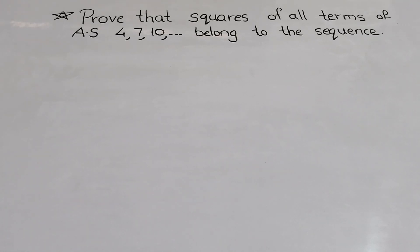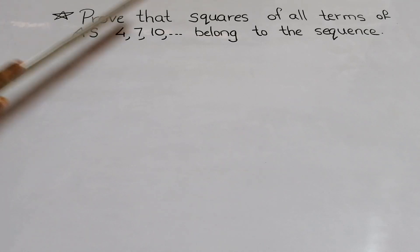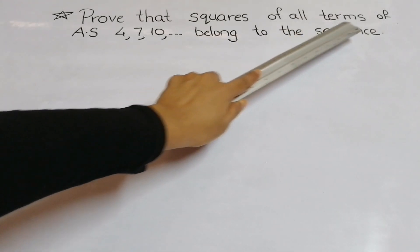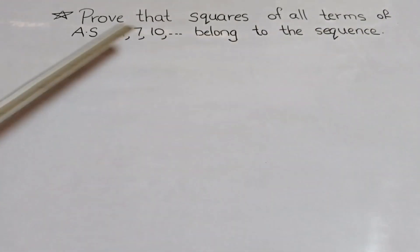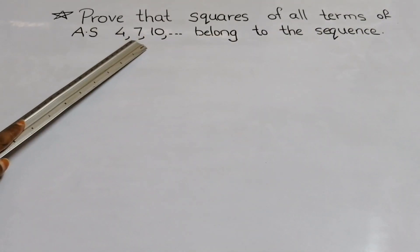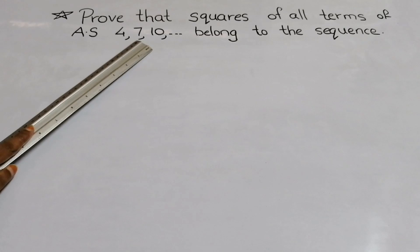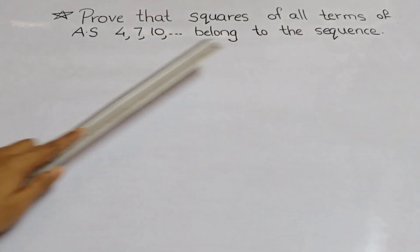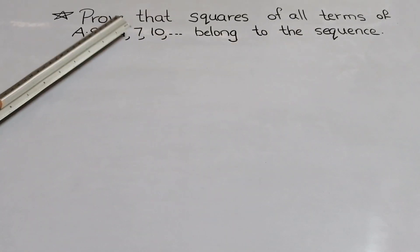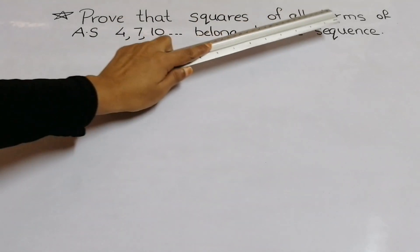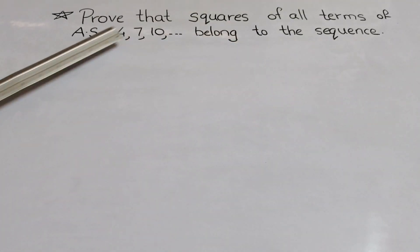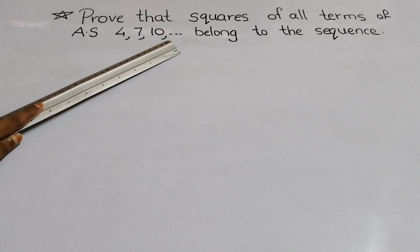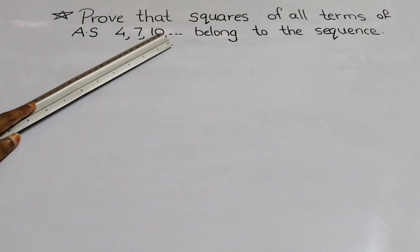Here you can see the question: prove that the squares of all terms of the arithmetic sequence 4, 7, 10, etc. belong to the sequence.